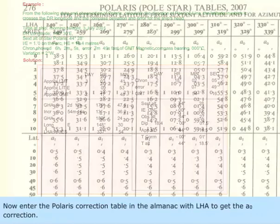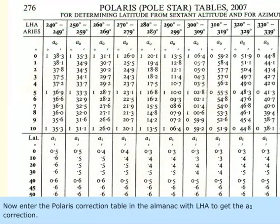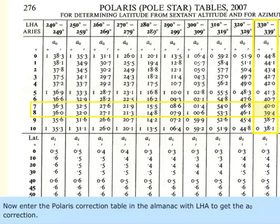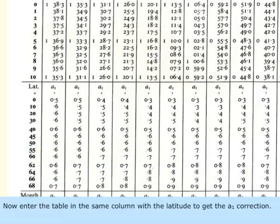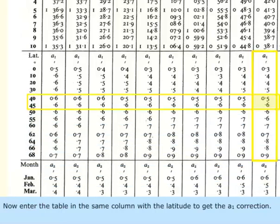Enter the Polaris correction table in the almanac with the LHA to get the A0 correction. Then enter the table in the same column with the latitude to get the A1 correction.